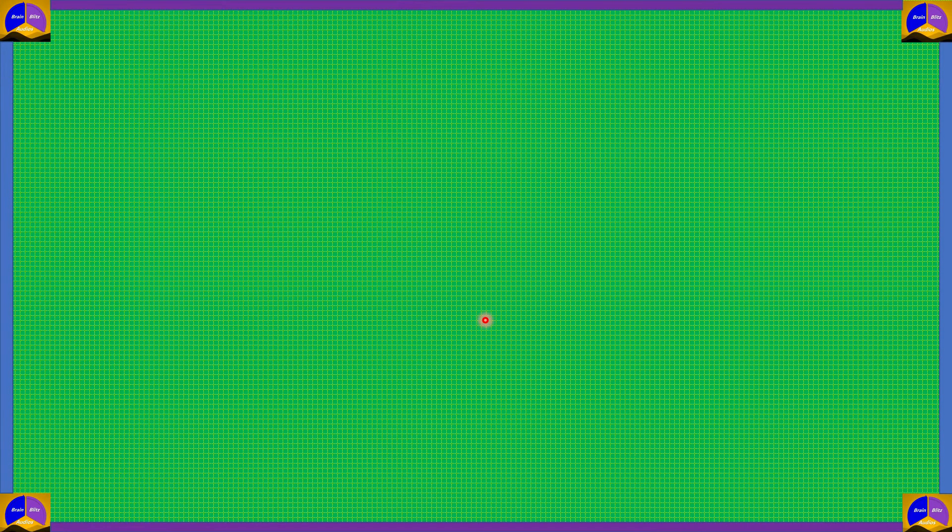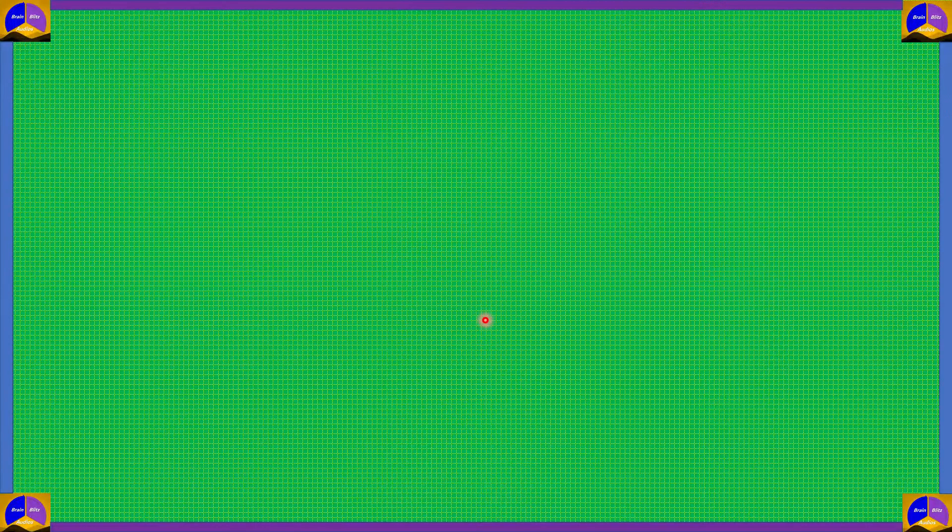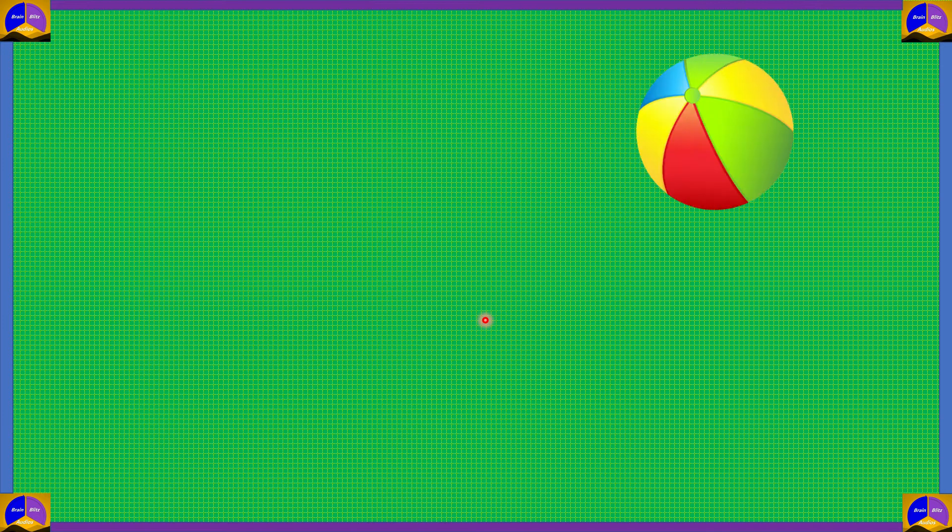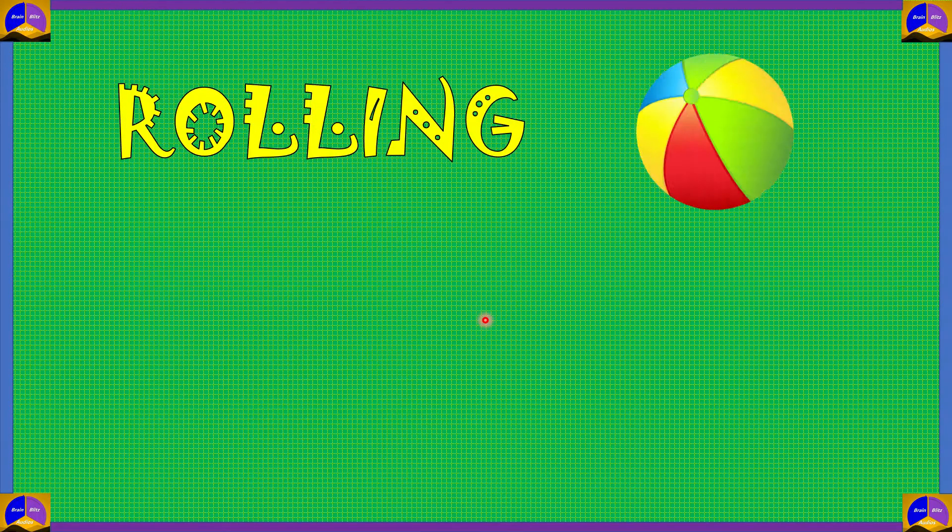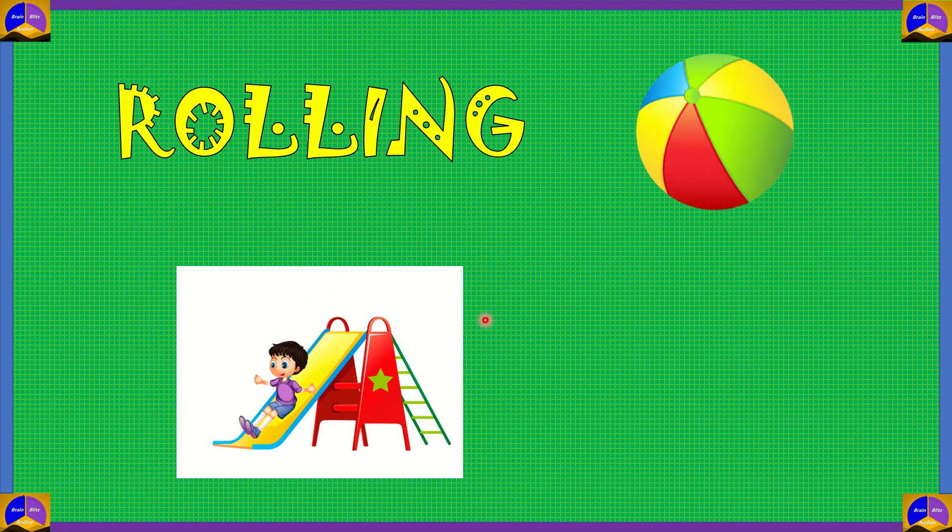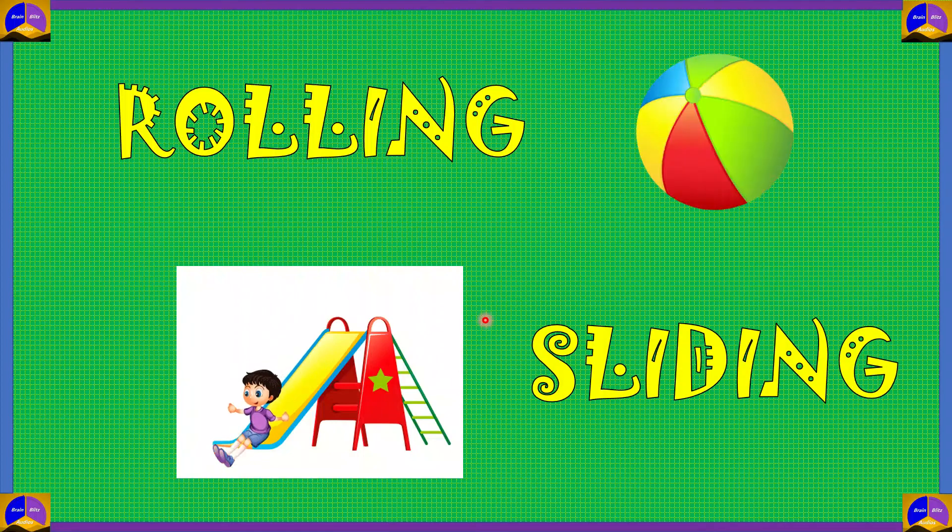Now, you must have played with the ball. If you notice how a ball moves, it goes round and round. This movement of this ball is called rolling. Then, you must have been to a playground and slid it down a slide. This movement is called sliding.